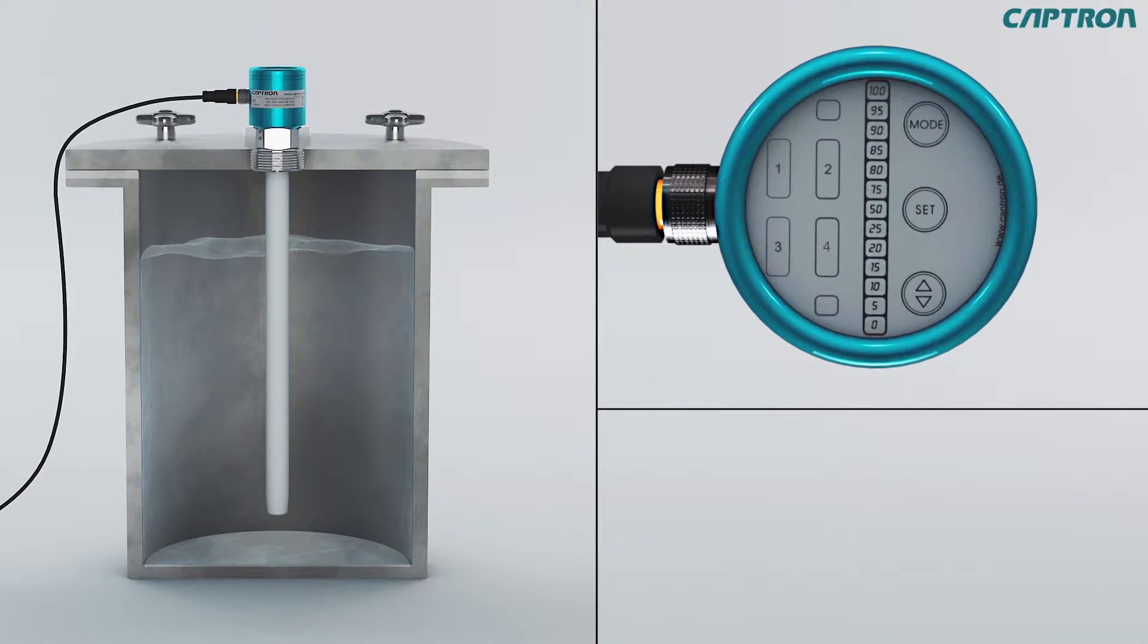For the adjustment, we will now show you the control elements and displays of the VA244. These are the displays: here you see the fill level, the display for maximum alignment MX, the switch output selection 1, 2, 3, and 4, as well as the minimum alignment MN.